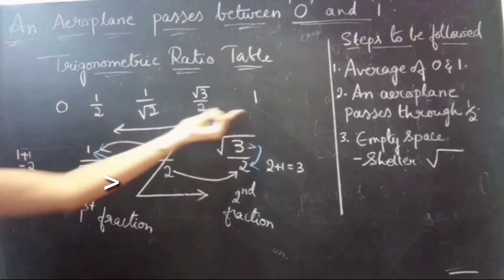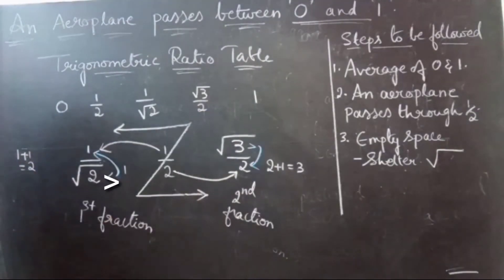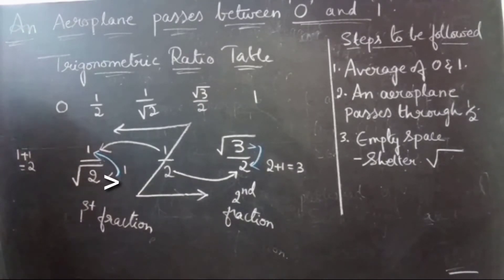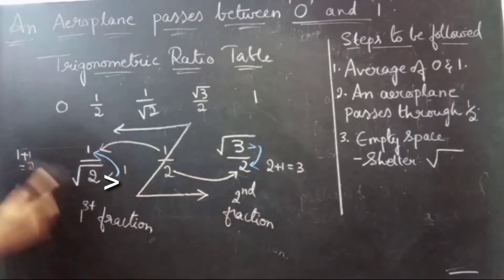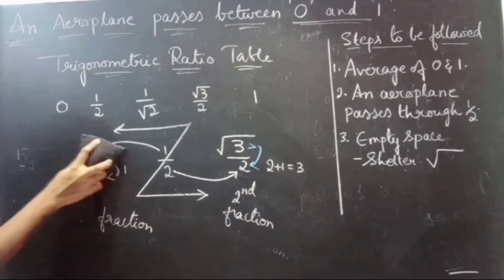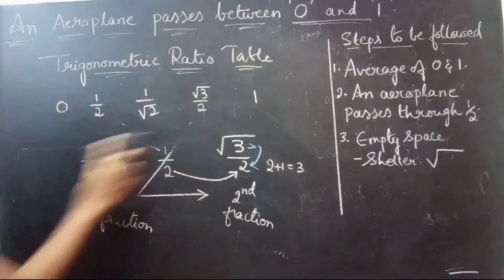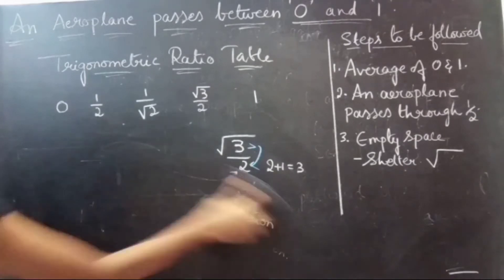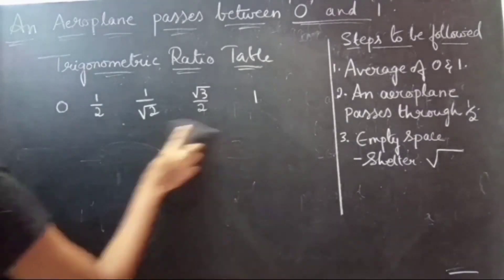So these are our trigonometric ratios for the sine function. Since we got the sine function trigonometric ratios, we can now find the trigonometric ratios for the remaining functions. Let's see how to find them.